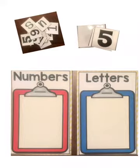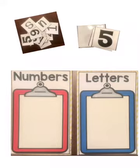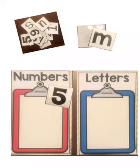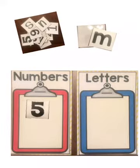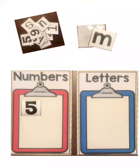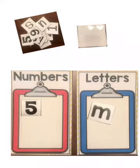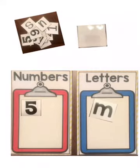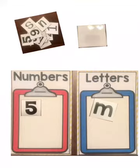Then what you are going to do is take turns with your partner turning over a card. I turned the first card over and decided it was a number, so I'm going to put it on the numbers clipboard. Then my partner turned over the next card and got the letter M, so they're going to sort it on the letter side. You're going to continue taking turns, turning over cards and deciding whether they are a number or a letter.